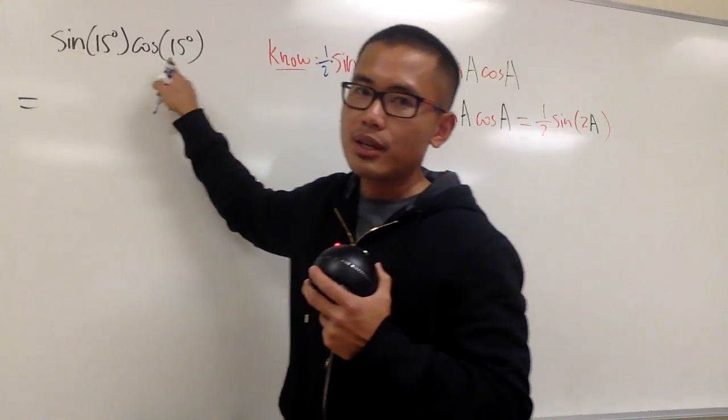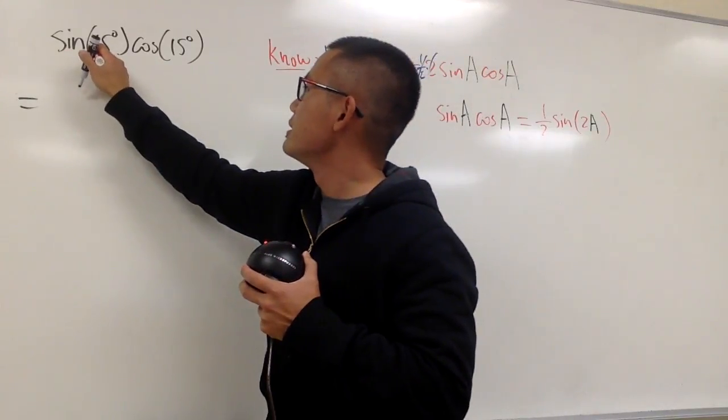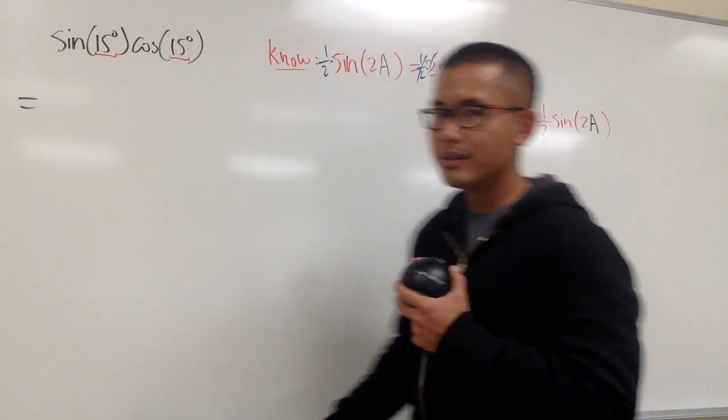So, sine of 15 degrees, cosine of 15 degrees, you know here is the a value for the angle.